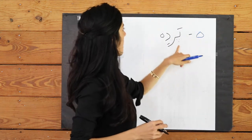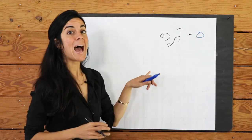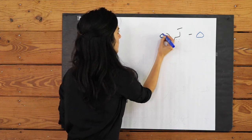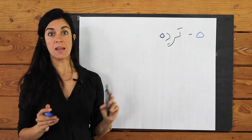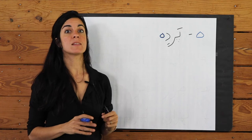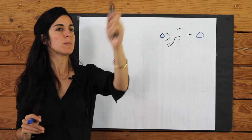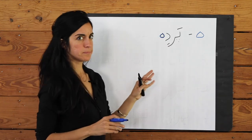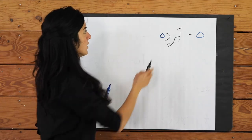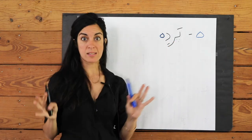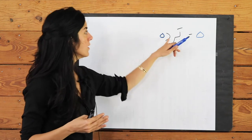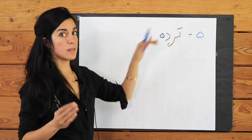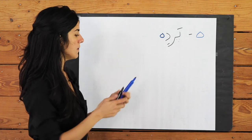Pardeh — and that means a blind or curtain. As you can see, the H is by itself; it doesn't connect to anything before it or after it. So we write the H all by itself. Pardeh.